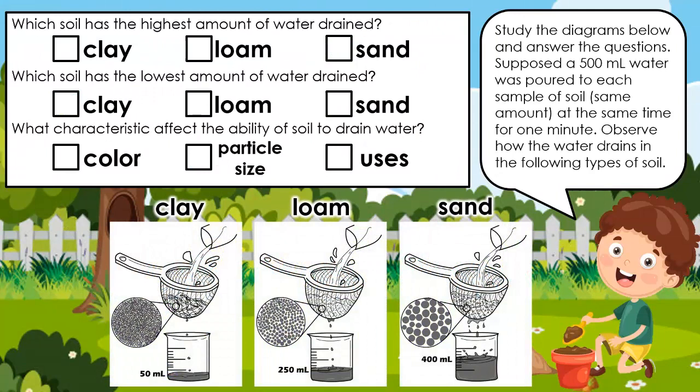Study the diagrams below and answer the questions. Suppose 500 ml of water was poured to each sample of soil at the same time for one minute. Observe how the water drains in the following types of soil.